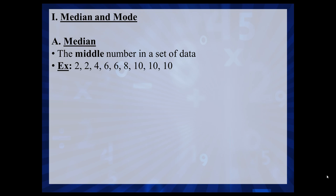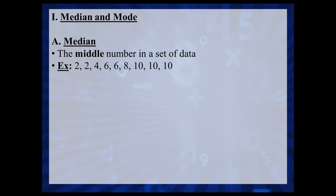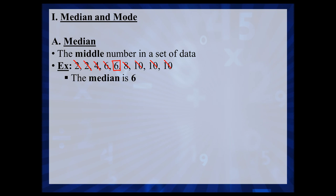The median would be, of these numbers in the data set, which number you would find in the middle. To find the number in the middle, you can just look at it and observe it, but sometimes it's a little bit difficult to keep track. So what I would do is start from the outside of the data set and work in. Go in by 1 — cross off the 2 and the 10. Go in by 2 — cross off the 2 and the 10. Go in by 3 — cross off the 4 and the 10. Go in by 4 numbers — cross off the 6 and the 8. And you can see right here your middle number is 6. That middle number is what we call the median.